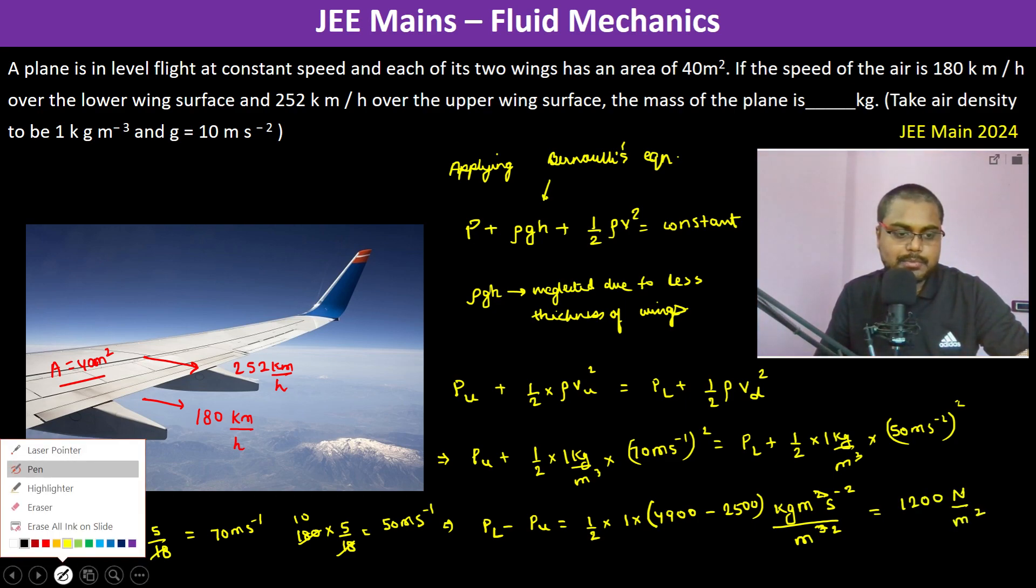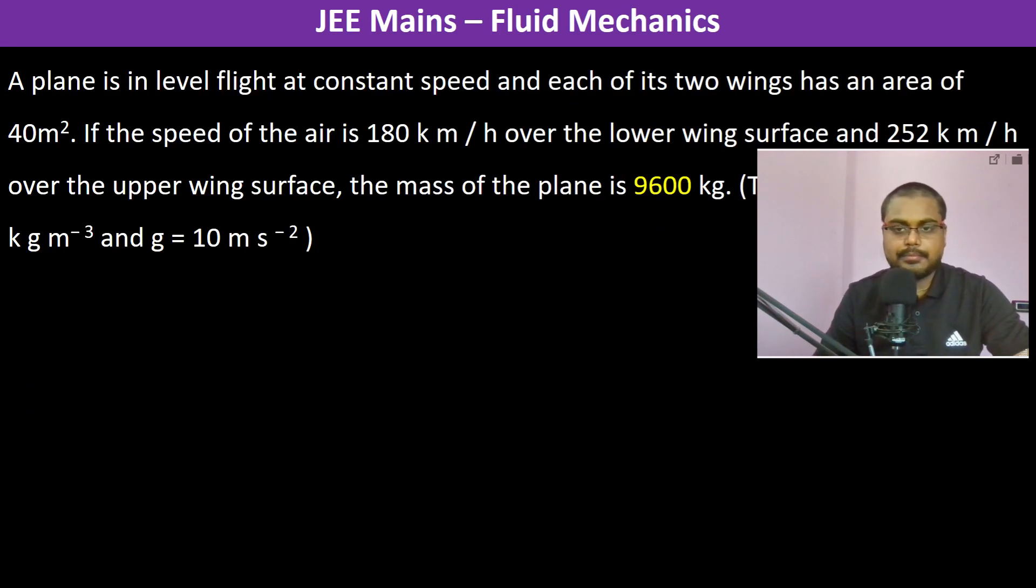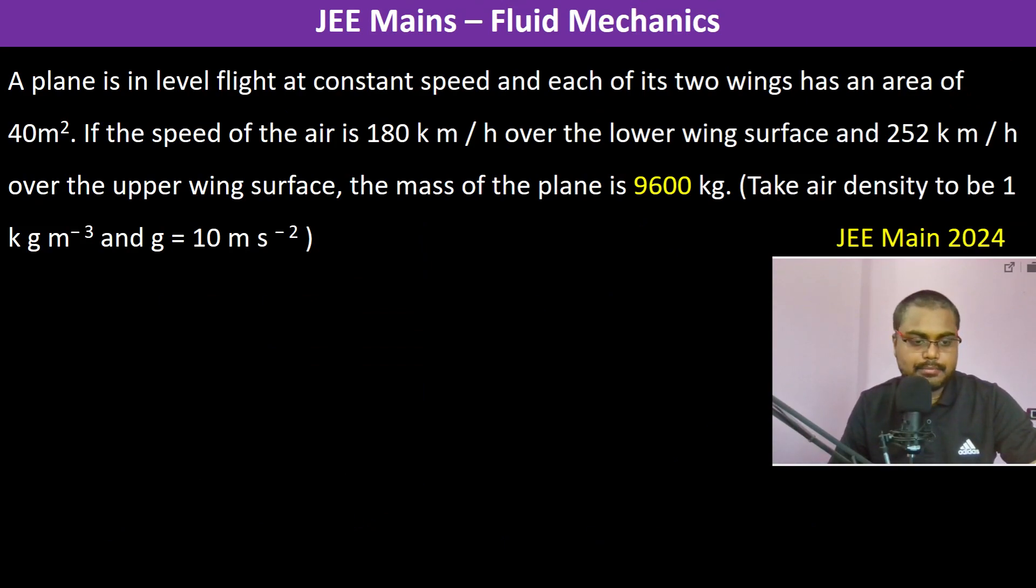This is pressure lower minus pressure upper. So if you see the pressure lower and the pressure upper. Therefore, if we draw the free body diagram of the plane, so this is the wing of the plane, and there is pressure lower minus pressure upper. So this is P L, and this is P U.